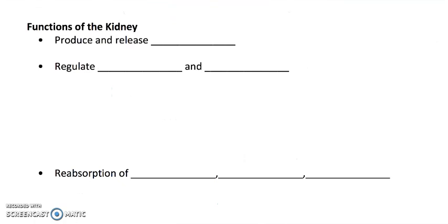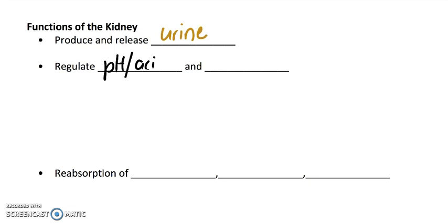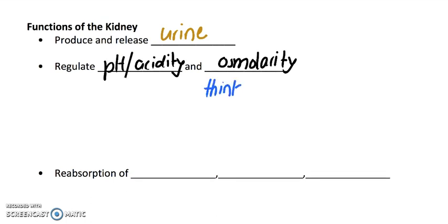So we mentioned that we're going to produce and release urine. Your kidneys can also regulate the pH or acidity of your blood. They can also regulate something called osmolarity — think of solutes and osmosis happening in the kidney. We'll mention more about this later.